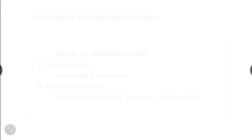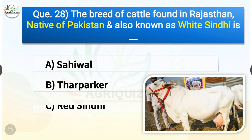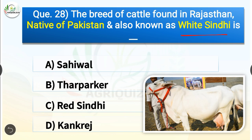Question number 28. The breed of cattle found in Rajasthan, native of Pakistan and also known as White Sindhi, is dash. The options are Sahiwal, Tharparkar, Red Sindhi or Kankrej. The correct answer is option B, Tharparkar. So the breed known as White Sindhi, found in Rajasthan and native of Pakistan, is Tharparkar.